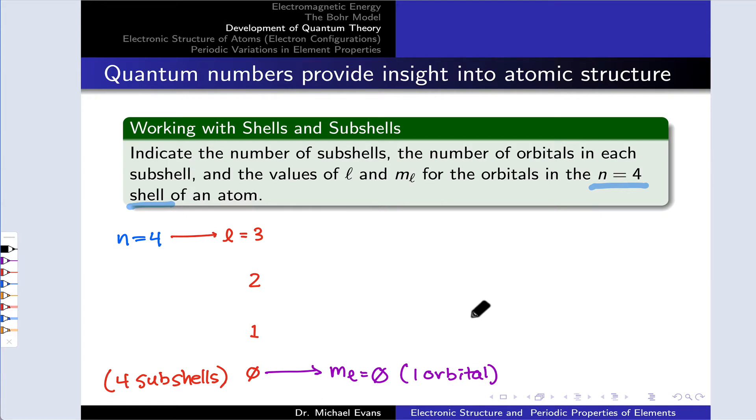Moving up to the 4p subshell at L equals 1, well now m sub L can have a value of positive 1, 0, or negative 1, and so there are three orbitals within the 4p subshell. Moving up to the 4d subshell at L equals 2, well now m sub L can take on any integer value between positive 2 and negative 2, and that corresponds to a total of five orbitals in the 4d subshell.